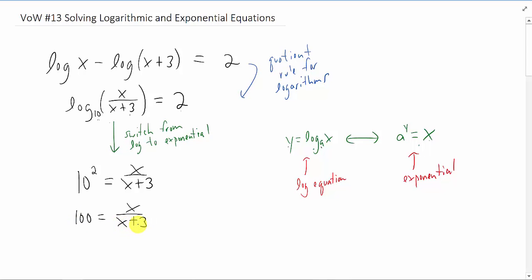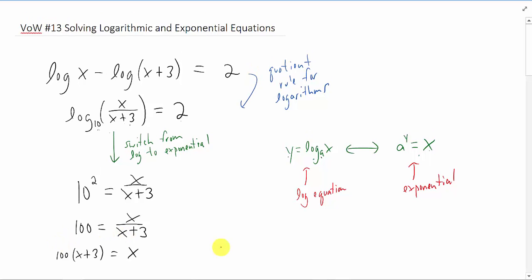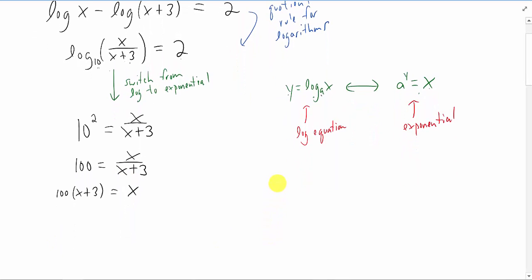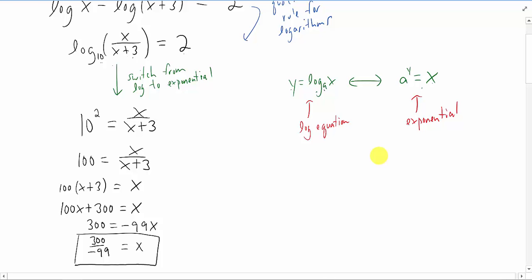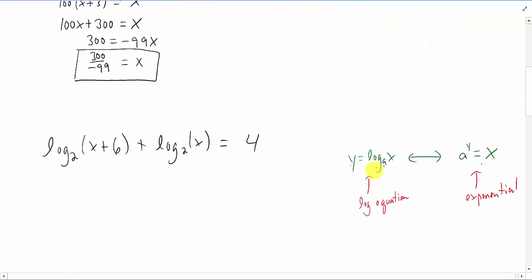Well, we multiply both sides of the equation by x plus 3. I am going to give us just a little bit of space here. I am going to distribute the 100. I am going to subtract the 100x from both sides, and I am going to divide both sides of the equation by negative 99. And that is going to be our solution for x. Feel free to pause that if you would like. I am going to move on to the next problem here.